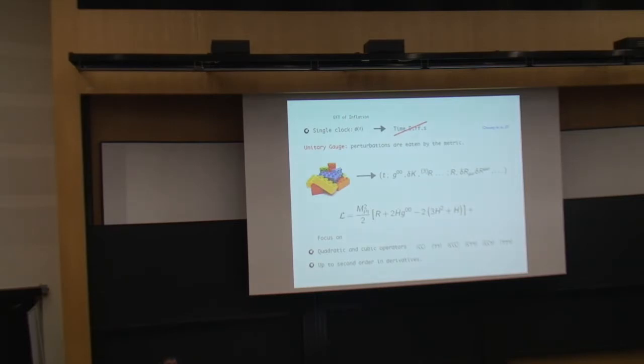Precisely, we work in the effective theory for single field inflation, where we have only one scalar degree of freedom, the inflaton. And when we go in unitary gauge the perturbations to this degree of freedom are written by the metric. The building blocks that we have at our disposal to construct the Lagrangian are basically all the operators that are invariant under diffeomorphisms.